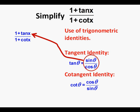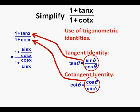Using these identities, we'll replace tangent x with sine x over cosine x, and we'll replace cotangent x with cosine x over sine x. Here's the expression with the tangent x and cotangent x replaced according to these two identities. We have 1 plus sine x over cosine x in the numerator, and 1 plus cosine x over sine x in the denominator.